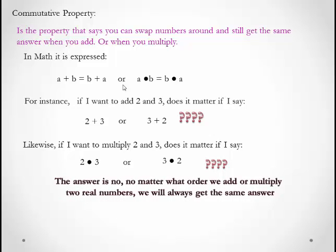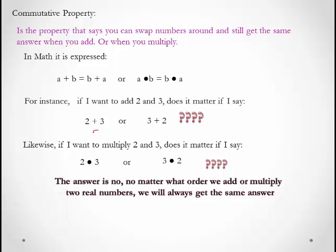No matter what order we add or multiply two real numbers, we'll always get the same answer. 2 + 3 is always going to be 5 whether we say 2 + 3 or 3 + 2. Likewise, 2 × 3 is always going to be 6 whether it's 2 × 3 or 3 × 2.